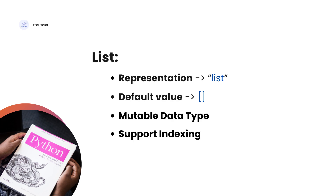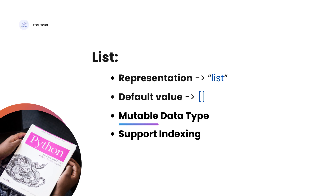What is the standard representation? The list type name is 'list' in lowercase. The default value is an empty square bracket. The list is a mutable data type — as we saw in the last video, we can modify the list.